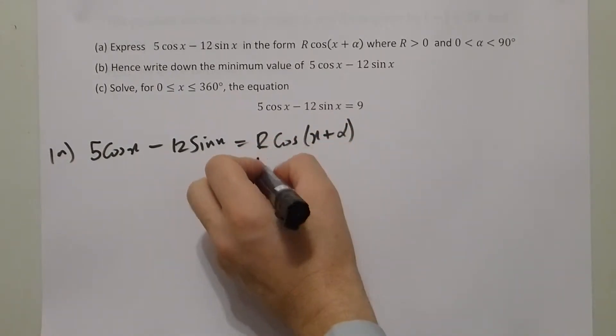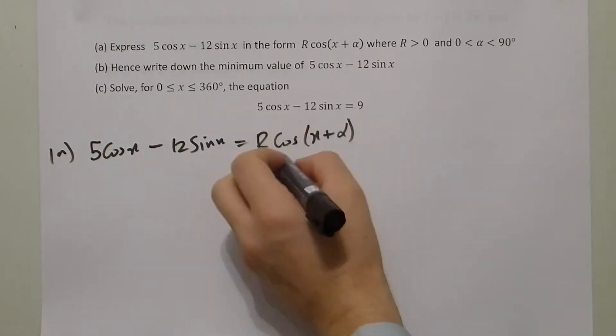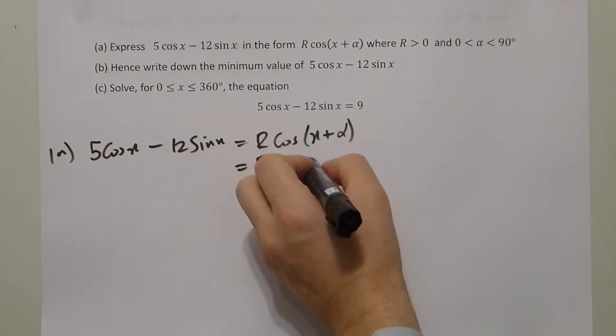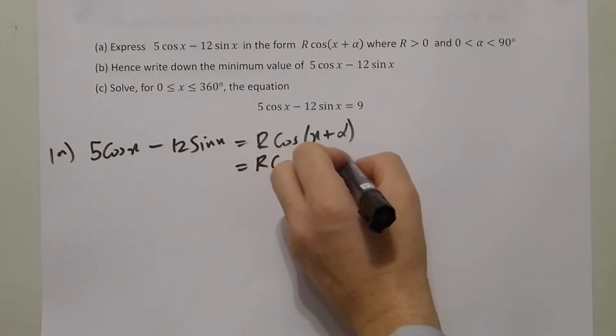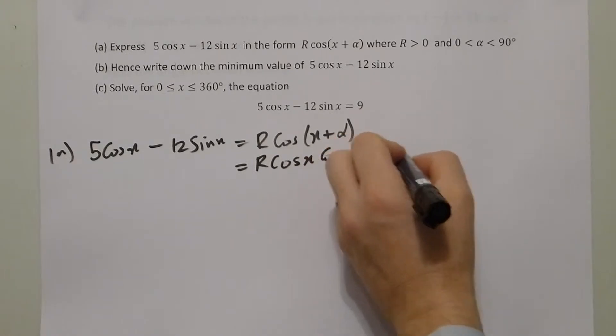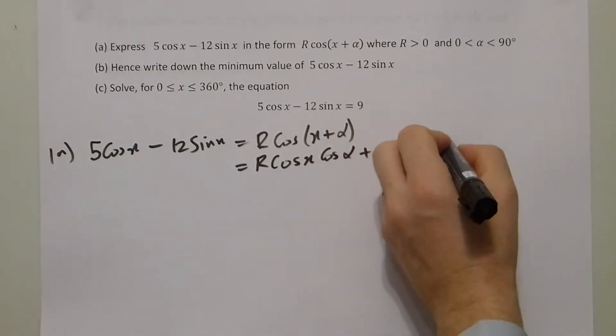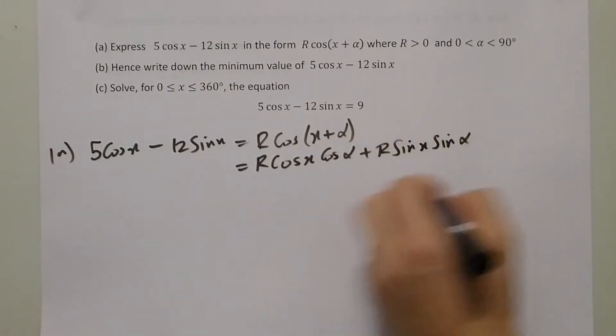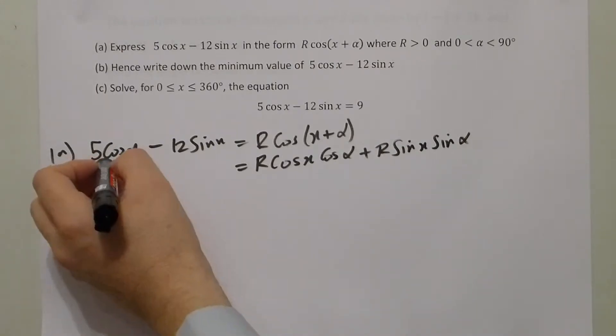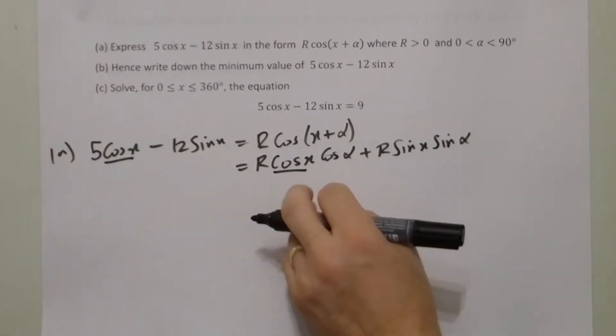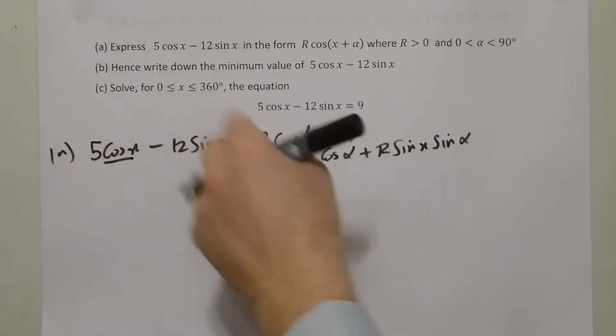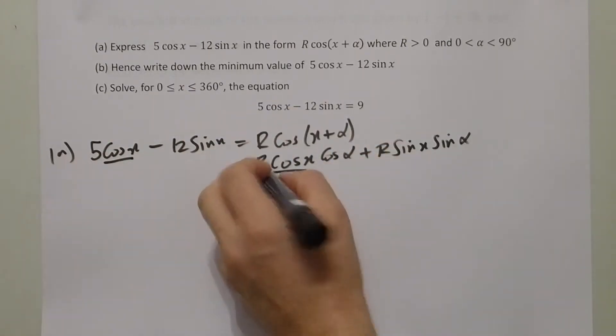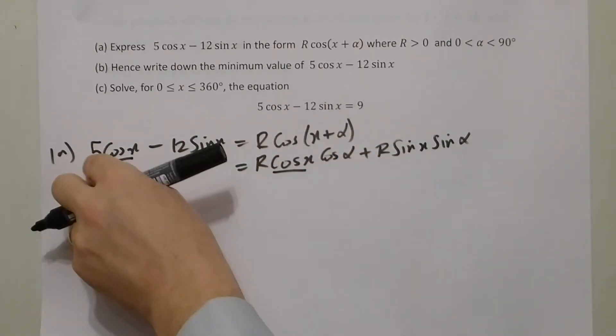Now, R cos(x + α) can be written as R cos α cos x plus R sin α sin x. Pairing up, that cos x must match up with that cos x, because the left hand side must equal the right hand side. So therefore, R cos α must be 5.